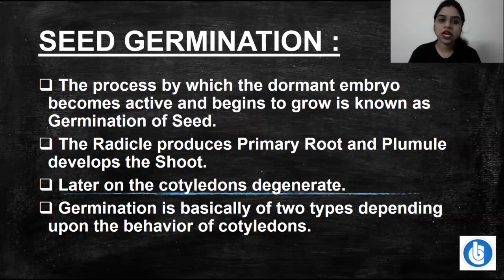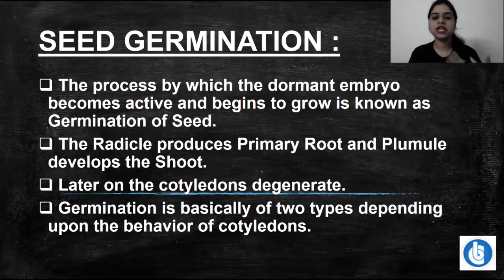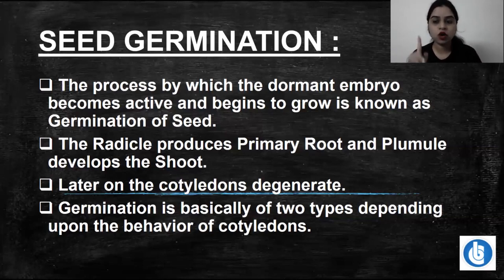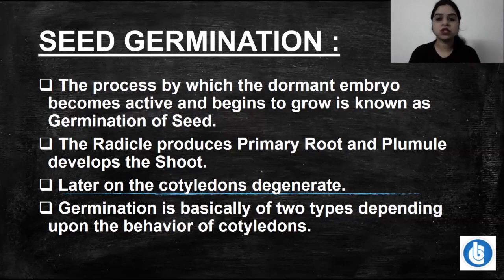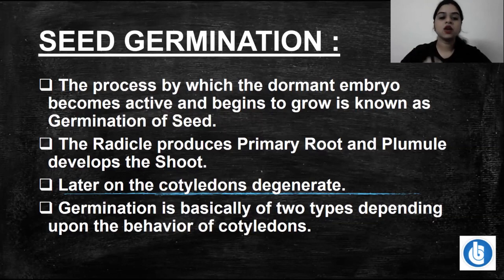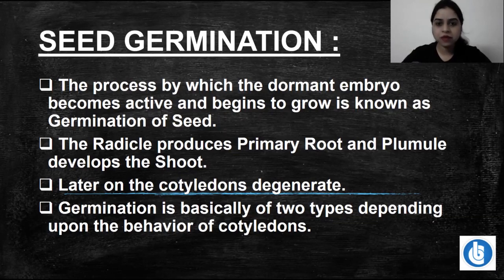When the plumule and radicle are growing, what about the cotyledons? In the dicot embryo there are two cotyledons; in the monocot embryo one cotyledon is active and the other remnant is called the epiblast. As the plumule and radicle take over, the cotyledon is going to degenerate — it is no longer needed.